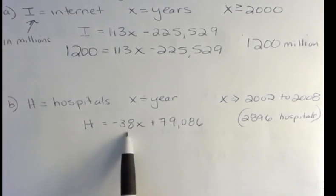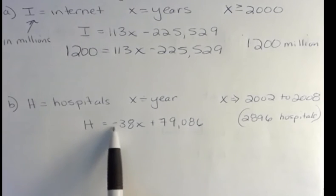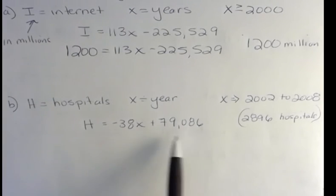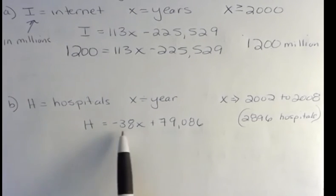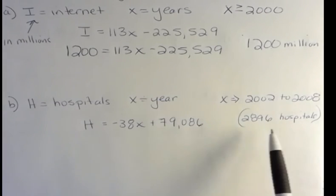Do you see how this is a negative 38? This is our slope. And that's the rate of change. And in this case, I can see that we're losing hospitals. The number of hospitals is actually going down from our initial 79,086 hospitals. Now we have fewer of those. I know we're having fewer as time goes on because of the minus there. We're losing hospitals. That's just an important thing to understand about an equation.